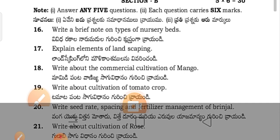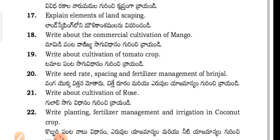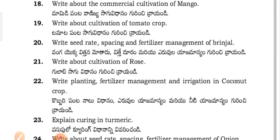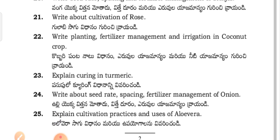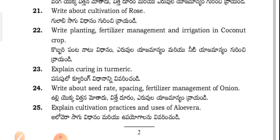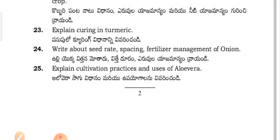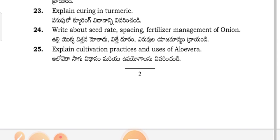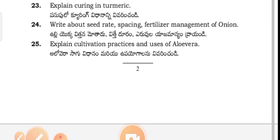Write about the commercial cultivation of mango. Write about the cultivation of tomato crop. Write seed rate, spacing, and fertilizer management of brinjal. Write about cultivation of rose. Write about planting, fertilizer management, irrigation of coconut crop. Explain cultivation practices and uses of Aloe vera.